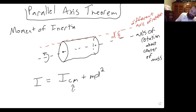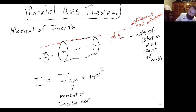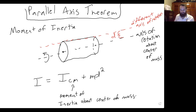So this is the moment of inertia about the center of mass. Let's see an example of this. We'll start with a thin rod, derive the moment of inertia about the center of mass, and then use the parallel axis theorem to determine the moment of inertia about a different axis of rotation.